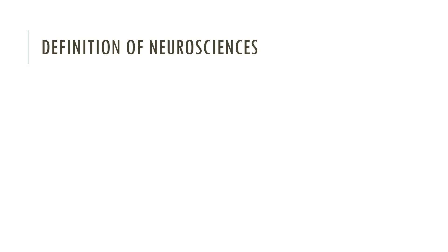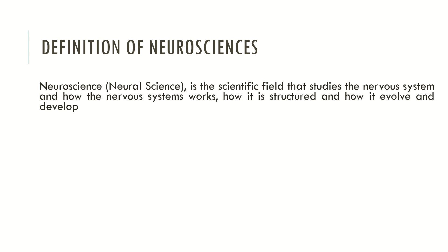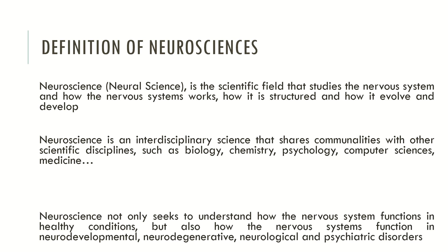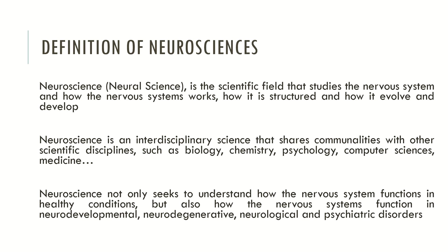Neuroscience, or Neural Science, is the scientific field that studies the nervous system — how it works, how it is structured, and how it evolved and developed over time. Neuroscience is an interdisciplinary science that shares commonalities with other scientific disciplines such as biology, chemistry, psychology, computer sciences and medicine. Neuroscience not only seeks to understand how the nervous system functions under healthy conditions, but also studies how it functions in neurodevelopmental, neurodegenerative and psychiatric disorders.